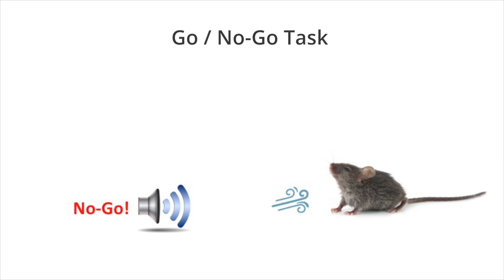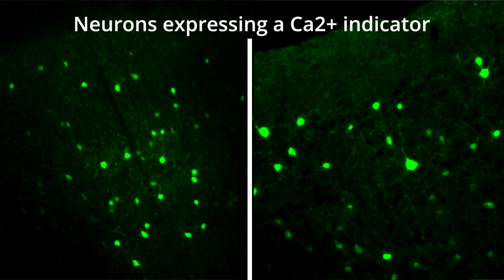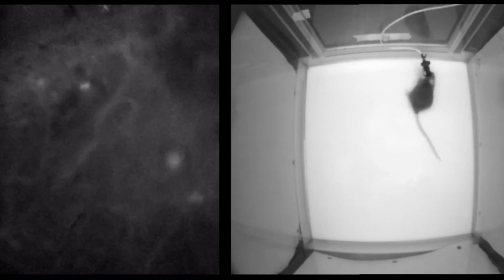What we did then was to train animals on this task and then use some genetic tricks to express a calcium indicator in each of these cell types, such that we could observe the activity of each of these kinds of neurons as the animals perform the task.